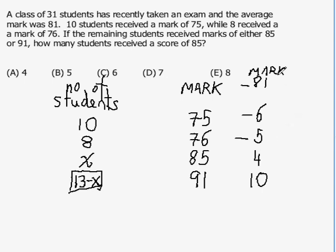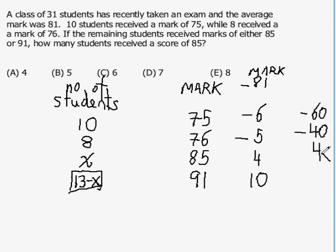I'm going to add up all of these deviation values. If I subtract 81 from each mark: there are 10 students that were 6 below 81, giving minus 60; 8 students that were 5 below; X students that were 4 below; and 13 minus X students that were 10 below.